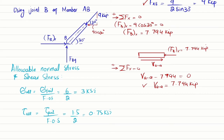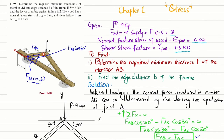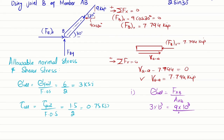For member AB: allowable normal stress = FAB / area of AB = 3 × 10³ psi. FAB is 9 kips = 9 × 10³ lb. The cross-sectional area of AB is 3 × T (width is 3 inches, thickness is T). So: 9 × 10³ = 3 × 10³ × (3 × T), solving gives T = 9 × 10³ ÷ (3 × 10³ × 3) = 1 inch. So the thickness T = 1 inch.